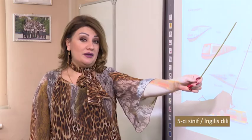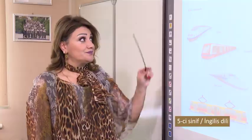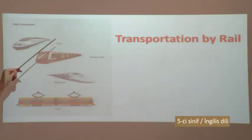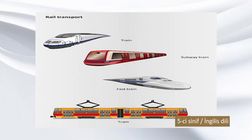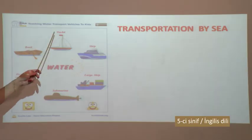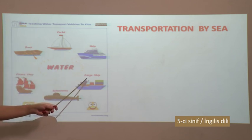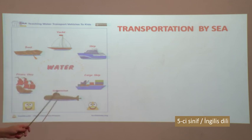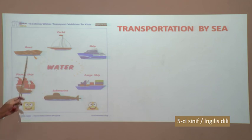This is transportation by rail. Now let's get acquainted with the transportation by rail. Rail transport: this is a train, this is a subway train, this is a fast train, and this is a tram. Now, this is transportation by sea: yard, boat, ship, cargo ship, submarine, pirate ship. This is water transport - transportation by sea or water.